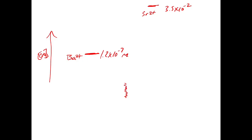We gradually increase the concentration of chromate as we titrate it in. Eventually we hit 1.2×10⁻⁷ M — at that point Q equals K and we start to precipitate barium. We continue precipitating barium until all of it is used up and quantitatively precipitated out of solution, with only a tiny residual amount from solubility.